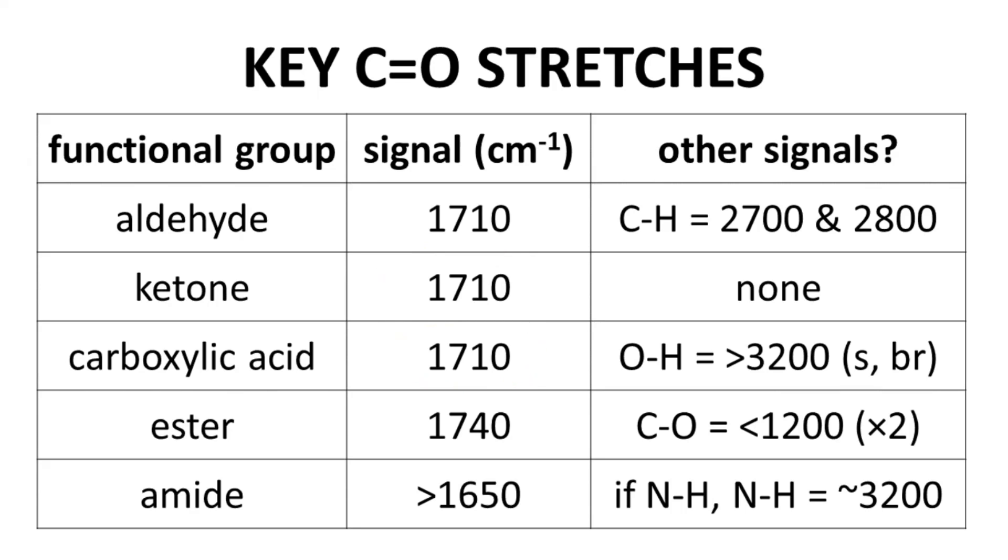Esters are a bit different. They generally appear at 1740 wave numbers or so. Amides are also different. They normally appear in the high 1600s.